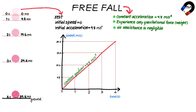We can find the distance moved by the ball from the area under the graph. Distance moved between zero and one second equals half times 1 times 9.8, equal to 4.9 meters. Distance moved between one and two seconds equals the sum of 9.8 and 19.6, multiplied by 1 then divided by 2, equal to 14.7 meters.